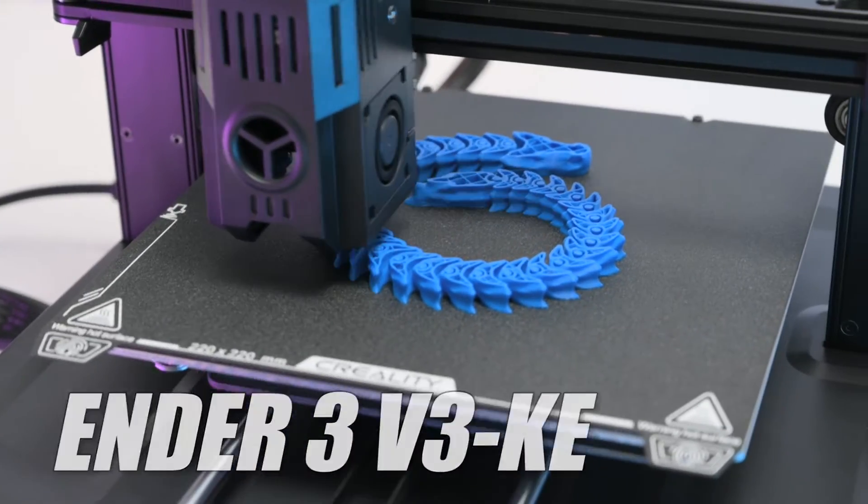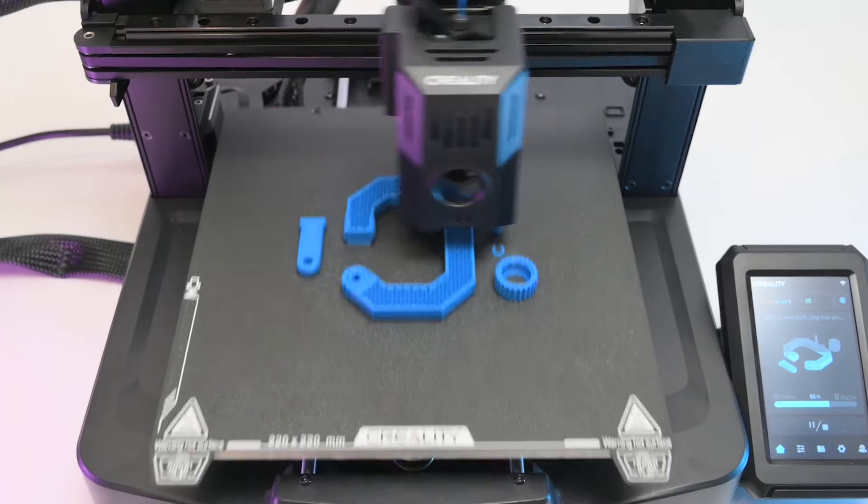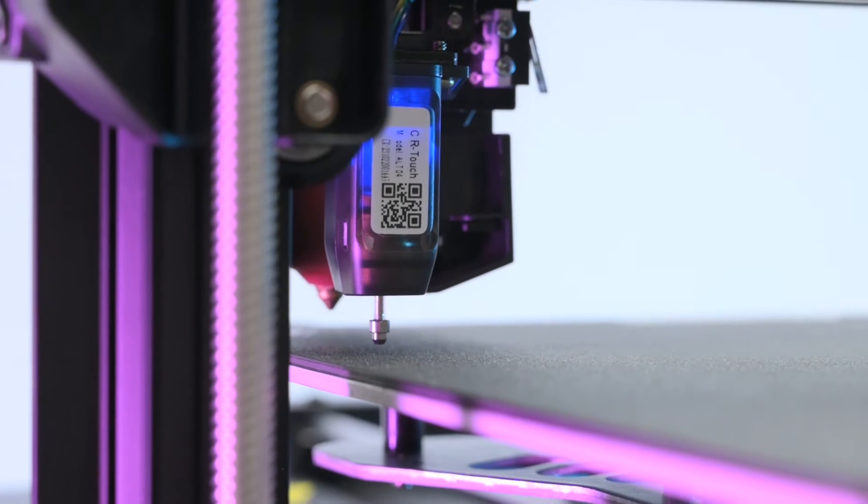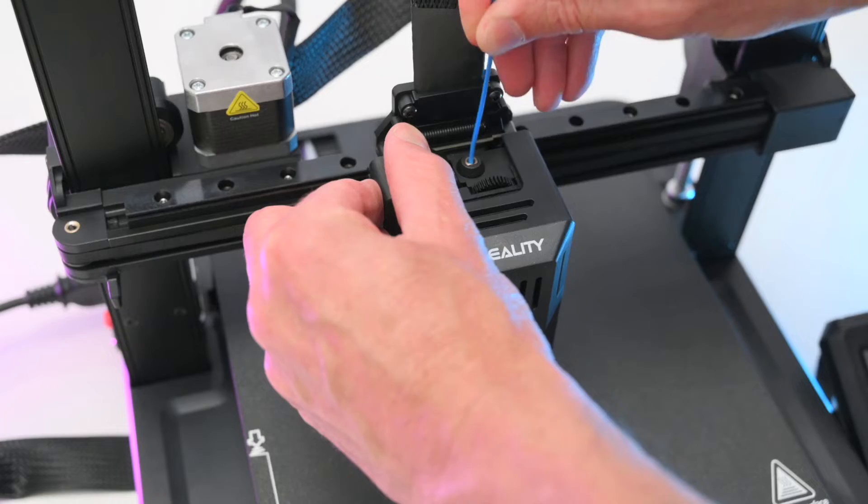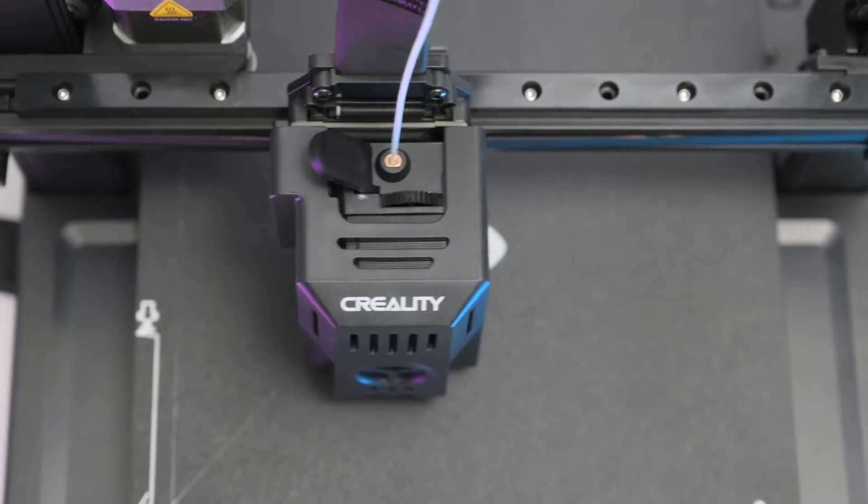This is the Ender 3 V3 KE made by Creality. The KE is the clipper edition of the next generation Ender 3 series. It's offering amazing features that are usually reserved for top end models like the hands-free auto bed level system, Auto Z offset, the Sprite direct extruder and impressive print speeds of up to 500mm a second.